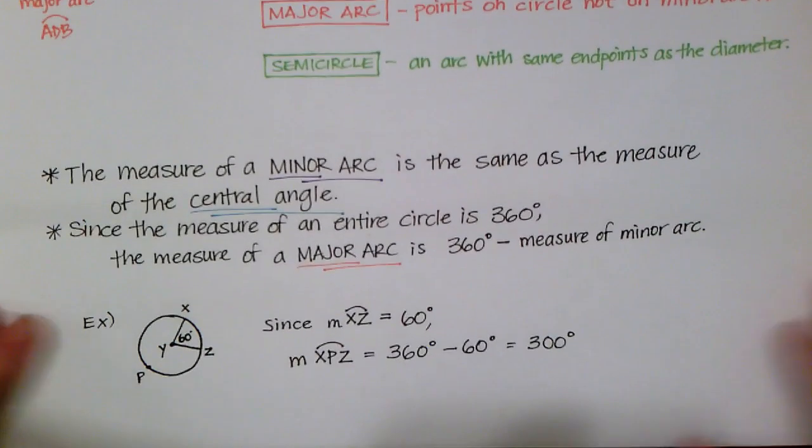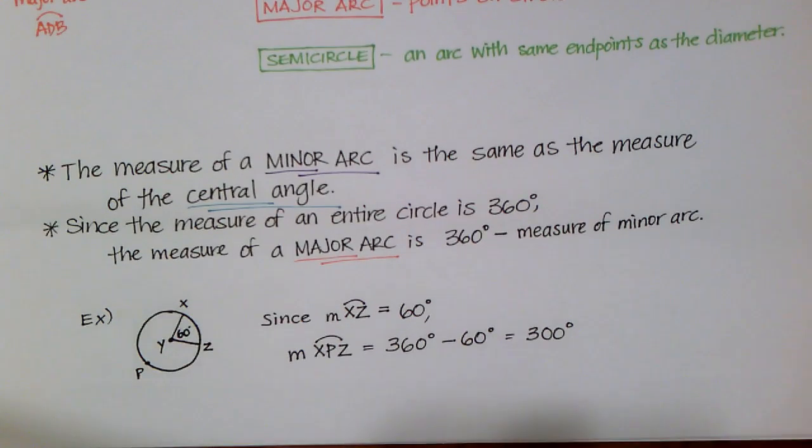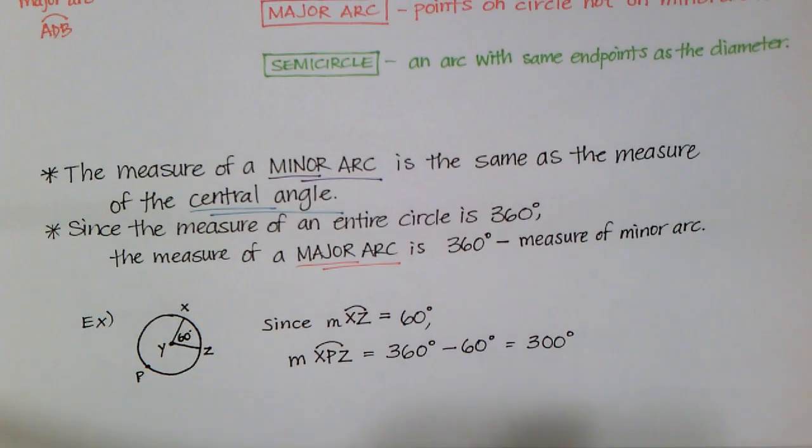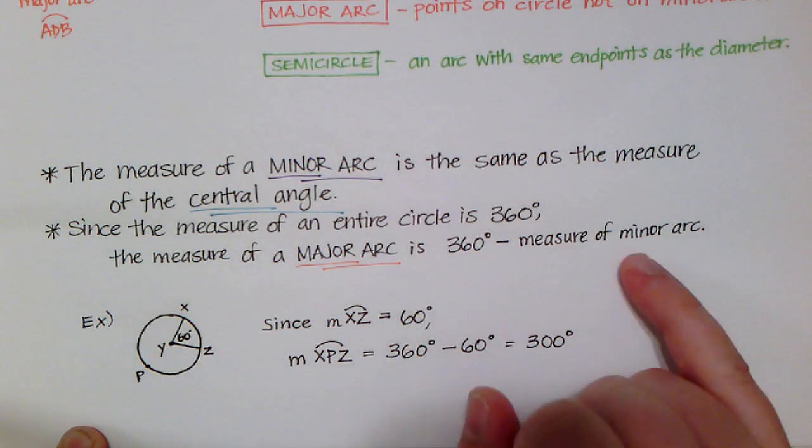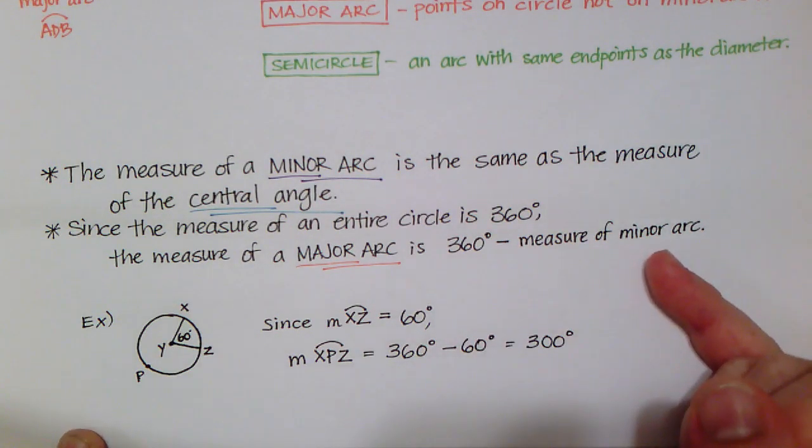The next thing that I wanted to go over was that the measure of a minor arc, the way that we find how long it is, is actually going to be the same as the measure of the central angle. So, it's going to be measured in degrees. And since the measure of an entire circle is 360 degrees, then I can find the major arc, just by subtracting from 360, the measure of the minor arc.